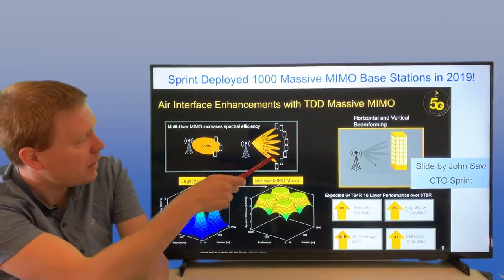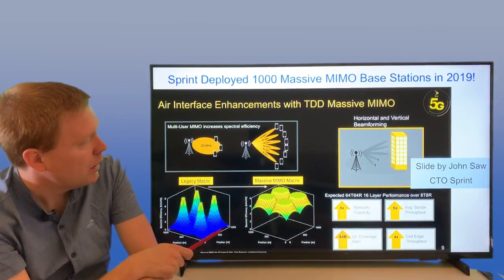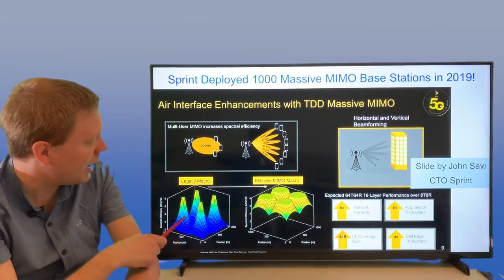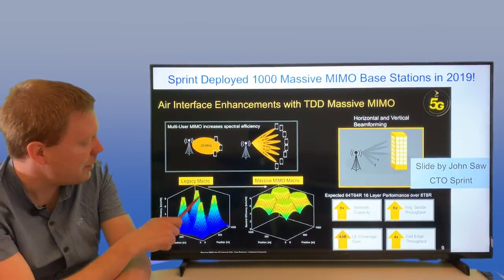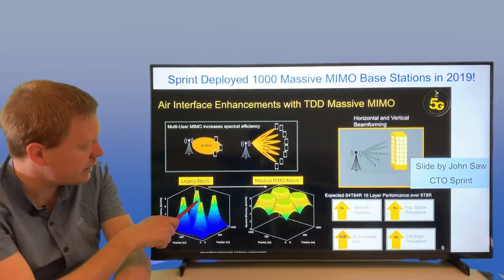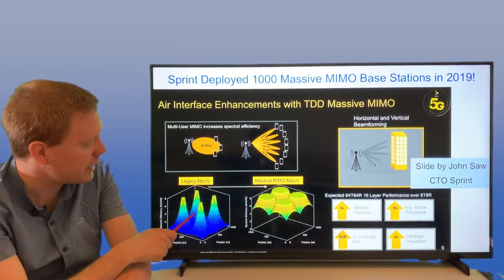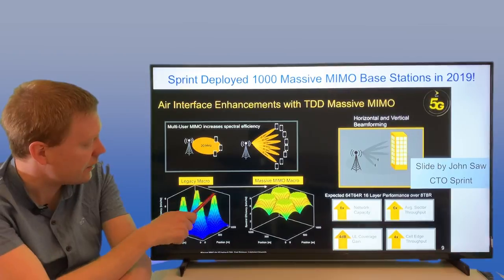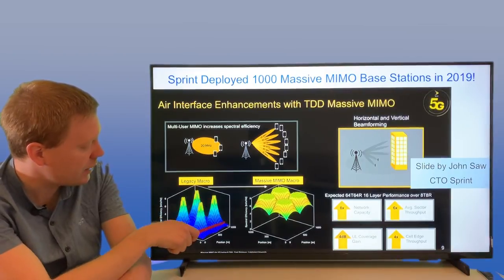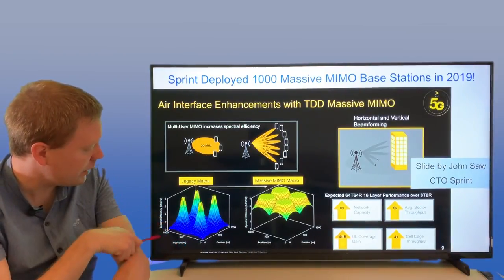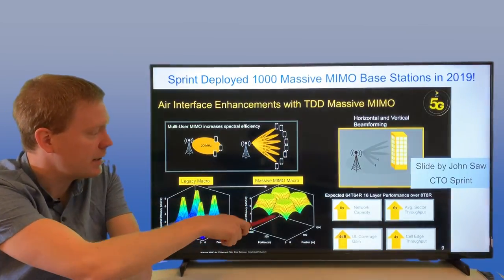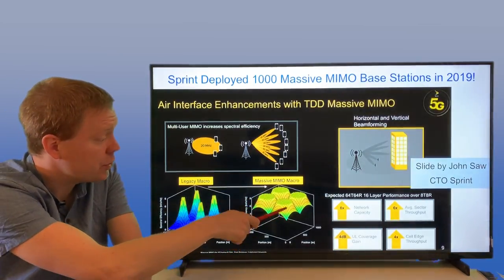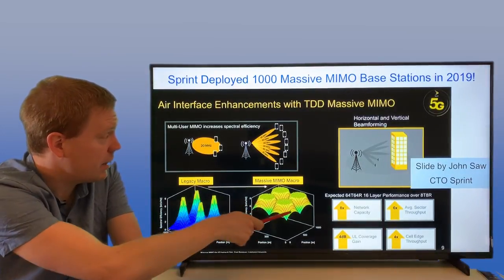Here's a slide from the CTO of Sprint, John Saw, where he's actually using some of my pictures as well to describe how you go from a legacy macro cell system where you have base stations that cannot focus the signals very well. So you get strong signals in the center of the cells, but towards the edges of the cell, you have fairly low spectral efficiency. Then you go to a Massive MIMO system where you can do adaptive beamforming to push up the performance on the edges of the cell as well.